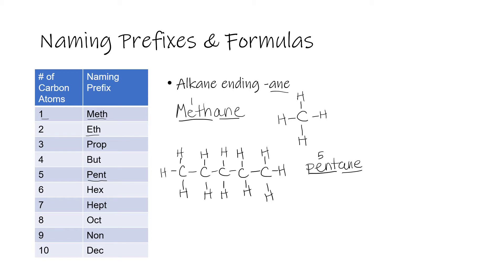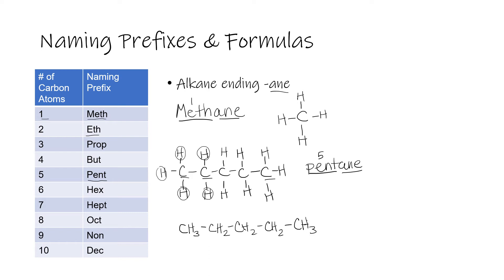You can also write pentane as a condensed structural formula, where you group the hydrogens right next to each carbon. The first carbon bonds to three hydrogens, so you write CH3, then draw a bond to the next carbon. The middle carbons each bond to two hydrogens, so they're CH2. The last end carbon also bonds to three hydrogens, giving another CH3. That is the condensed structural formula for pentane.